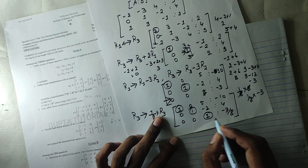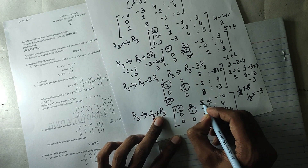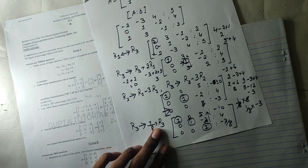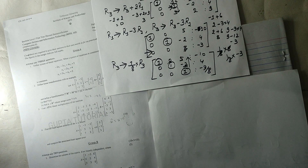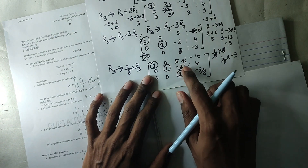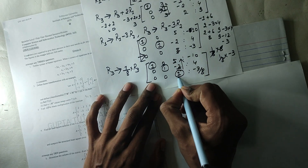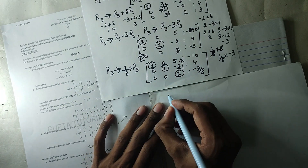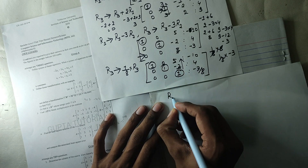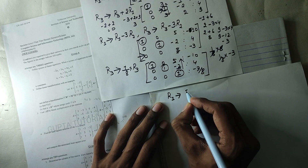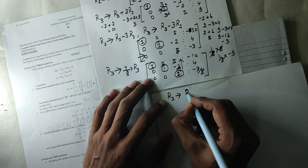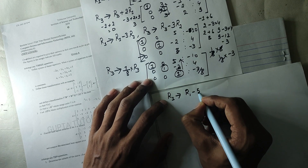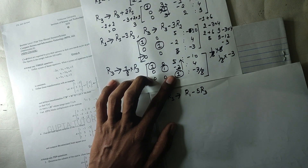Pivot element means that you need 0 above and below it. You need to do 0 operations. So this is not the same thing. R1 implies — how do you get this? This is 5. So you get R1 minus 5 R3 is equal to 0.